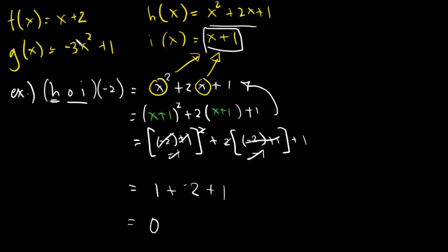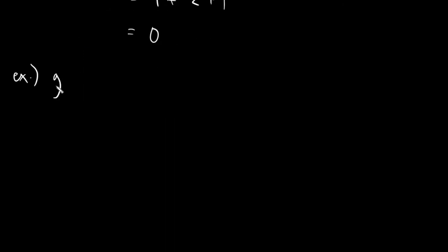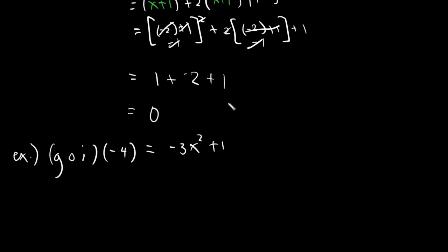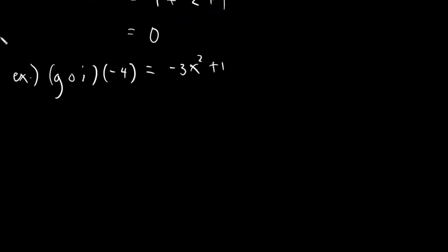Say we have g circle i of negative 4. Our g, let's list it down, it's negative 3x squared plus 1. And then our i is just simply x plus 1.